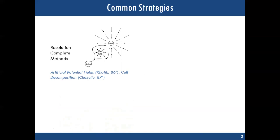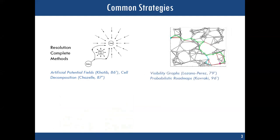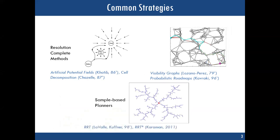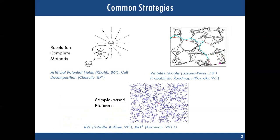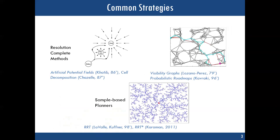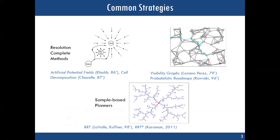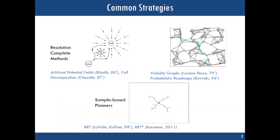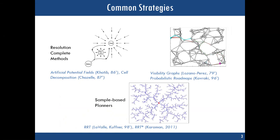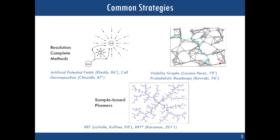This problem of motion planning was formulated in the late 1970s, and since then various algorithms have been proposed — from resolution-complete methods such as artificial potential fields, to sampling-based planners. These are probabilistically complete: they start from some root state and expand a tree by randomly sampling obstacle-free spaces, eventually finding a goal region. The notable algorithms in this area include RRT, its variant RRT*, and bidirectional versions of these algorithms.